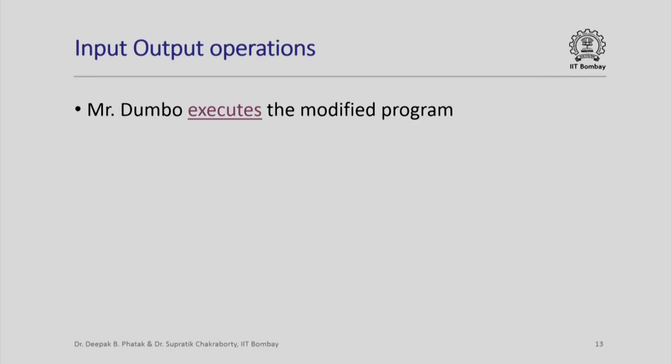You will agree that with this simple mechanism, we have actually made Dumbo a very real computing device. As a matter of fact, the program that we have written to calculate the total number of students in a class given the number of boys and girls uncannily looks very similar to an actual C++ program which we shall later learn to write for an actual computer. Let us look at a C++ program.